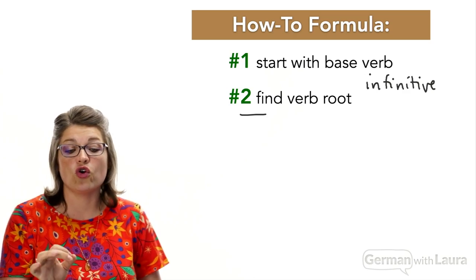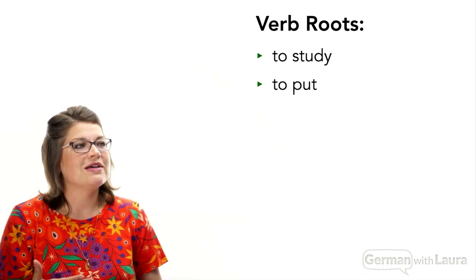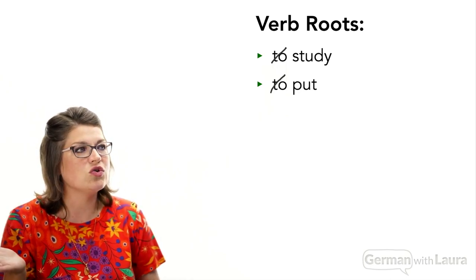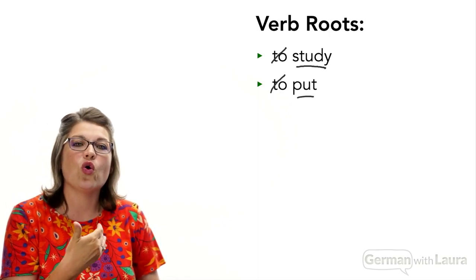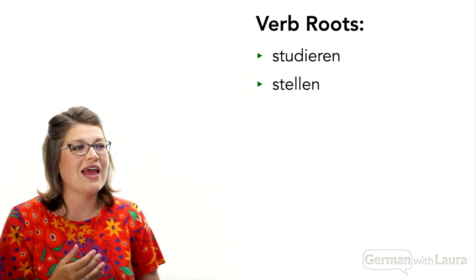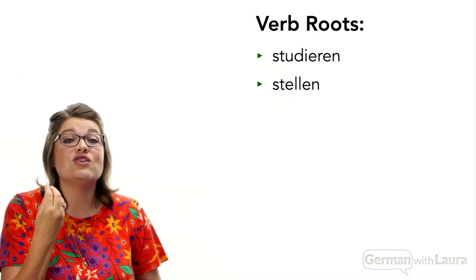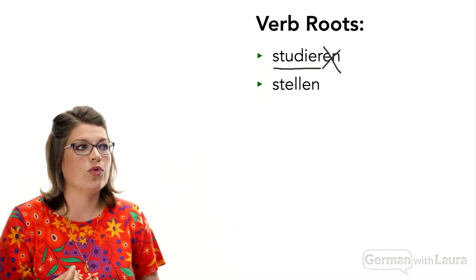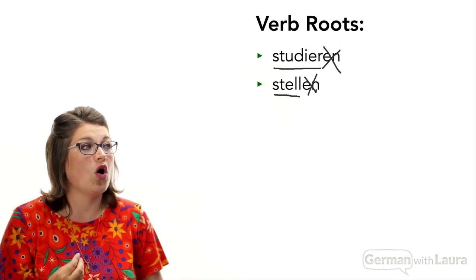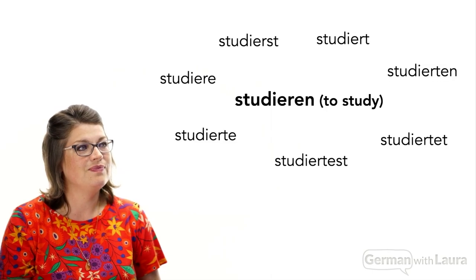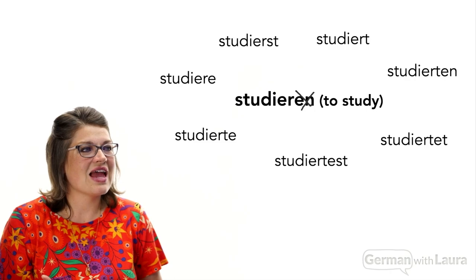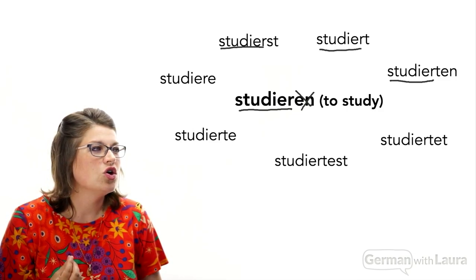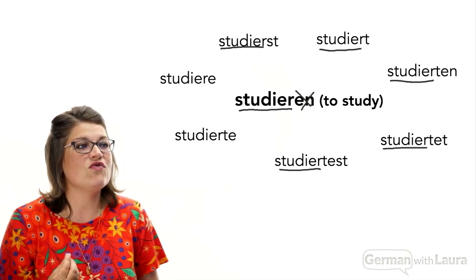The next step is to find the verb root. In English, the verb root is found by simply removing 'to' — so from 'to study' or 'to put,' the root is 'study' or 'put.' In German, we knock the '-en' off the end of the verb, and what we're left with is the verb root, also called the verb stem. With studieren, taking off the '-en' leaves the root 'studier' — which is what all the different conjugated forms have in common.